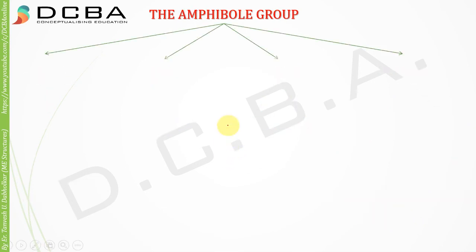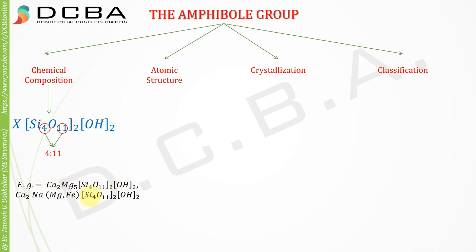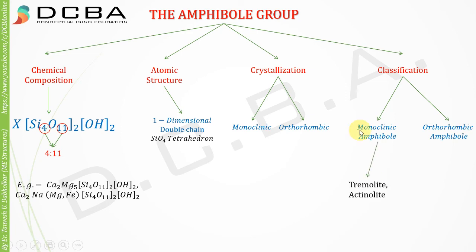Third, the amphibole group. The chemical composition is XSi4O11(OH)2, where silicon and oxygen are in the ratio of 4:11. An example is Ca2Mg5Si4O11(OH)2. The atomic structure is a one-dimensional double chain. Crystallization is monoclinic or orthorhombic. Classification is monoclinic amphibole and orthorhombic amphibole. For monoclinic amphibole examples are tremolite and actinolite, and for orthorhombic amphibole it is anthophyllite.